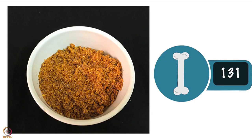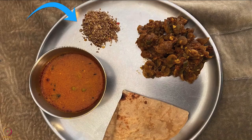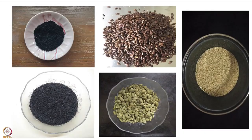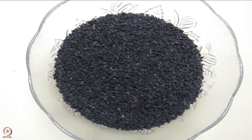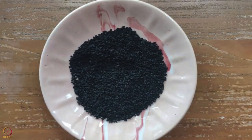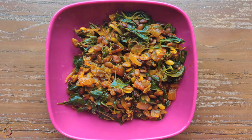One-fourth cup of this chutney powder gives around 131 mg of calcium. You can have it 2–3 times a day with meals. Instead of white sesame seeds, you can use black sesame seeds, flax seeds, poppy seeds, or niger seeds.